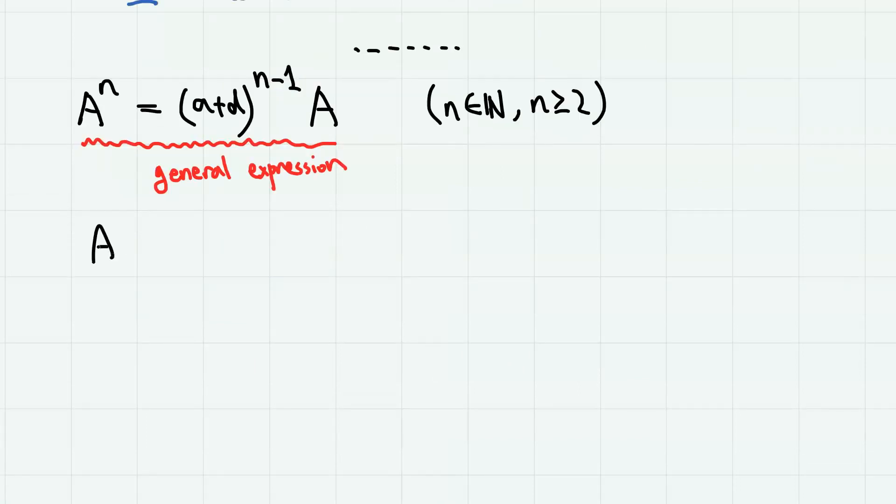So by this general expression, A to the power of 2022 is A plus D to the power of 2021 times matrix A. And remember that we want to prove that if A to the power of 2022 equals 0 matrix, then A square equals 0 matrix.